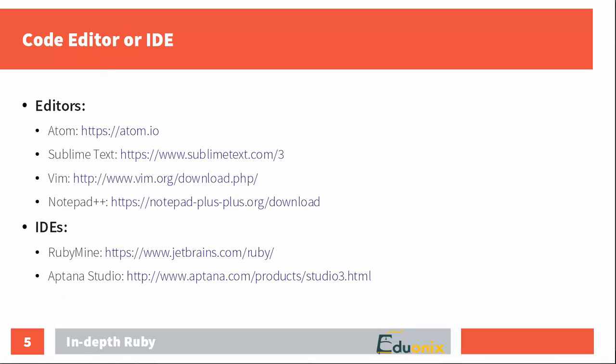Now, what about the editor you're going to use throughout this course? It's totally up to you — you can use any code editor you like, but it's very helpful if it has at least basic code highlighting. One editor I'd really recommend is called Atom, created by GitHub. It's a really handy tool and it's absolutely free. Another popular choice is Sublime Text, then Vim used quite extensively especially by seasoned developers, and also Notepad++.